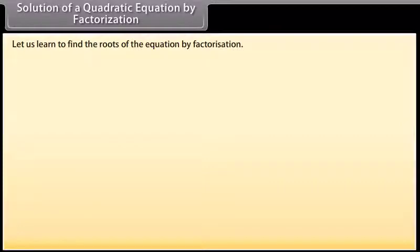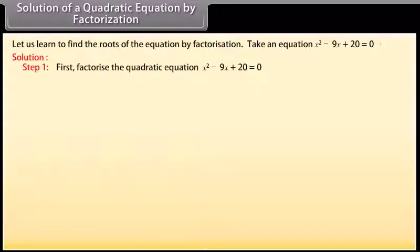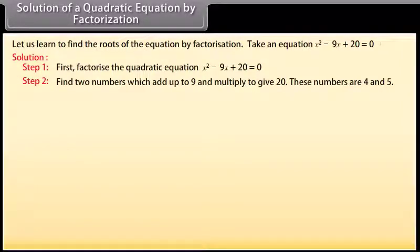Let us learn to find the roots of the equation by factorization. Take the equation x² − 9x + 20 = 0. First, factorize the quadratic equation. Find two numbers which add up to 9 and multiply to give 20. These numbers are 4 and 5.